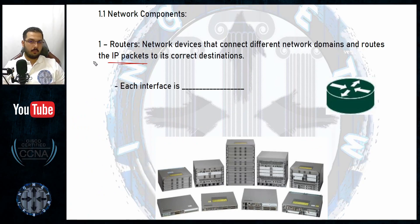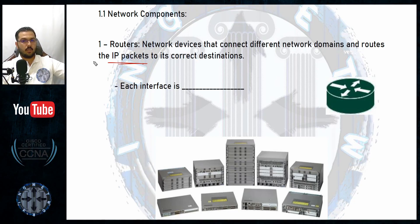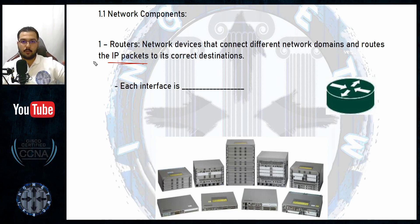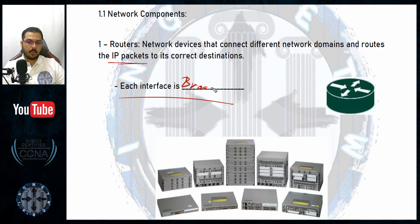Routers connect different domains and forward IP packets. When you communicate with someone far away, the router takes your packet and redirects it to the correct destination — forwarding it so it reaches the other end, such as another mobile phone or router connected to your friend. This is the concept of routing — forwarding an IP packet to the correct destination.